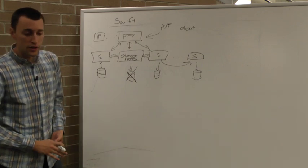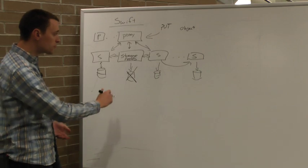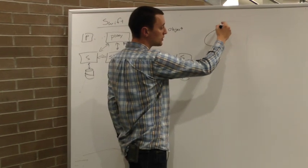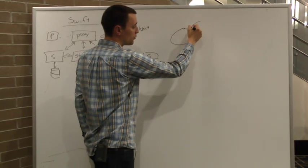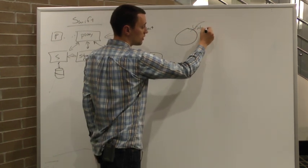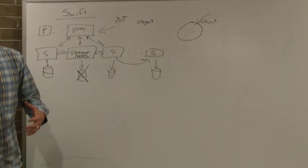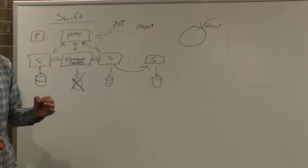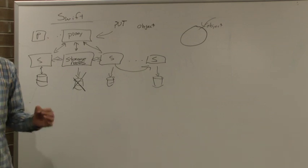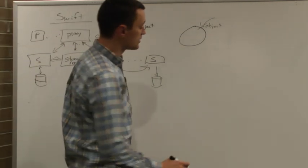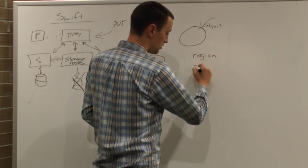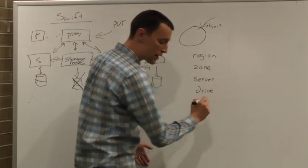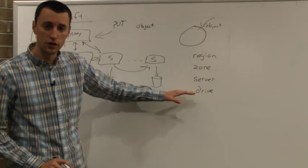The one other thing I want to talk about with Swift is about how it chooses where to place the data. Swift uses a concept called a ring to place the data. And what happens is that when a request comes in, we look for, let's say, some object. We then can look up in the ring what appropriate storage nodes are responsible for this data. And these nodes are chosen such that they are in isolated failure domains. So the way we organize things is based on first region, then zone, then server, and then drive. So we can ensure that all three replicas are going to be on different drives.